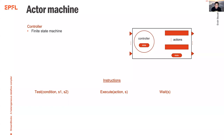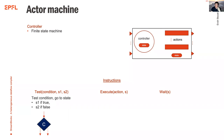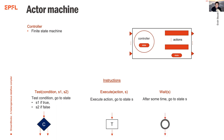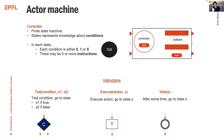An actor machine eliminates unnecessary checks. It's an abstract machine model with a controller and states, where every state executes a different set of instructions. A test instruction takes a condition and two states S1 and S2 — if the condition is true, go to S1; otherwise S2. An execute instruction executes an action and goes to state S. A wait instruction waits for something external to the actor before going to state S.